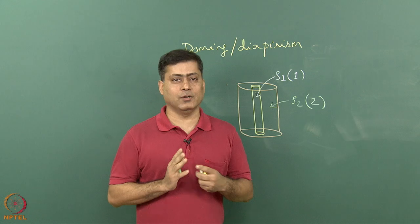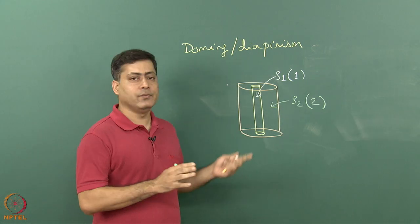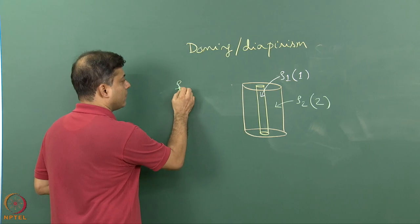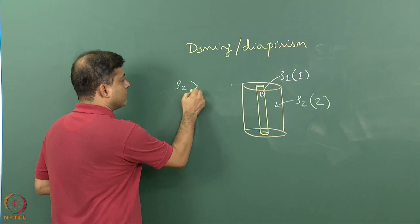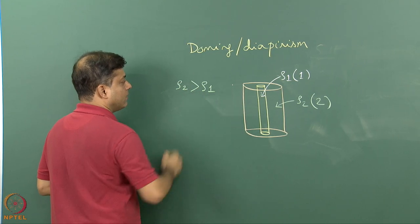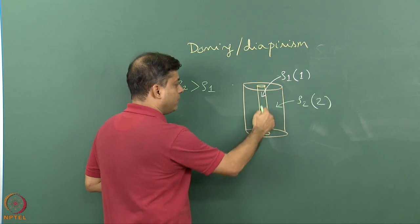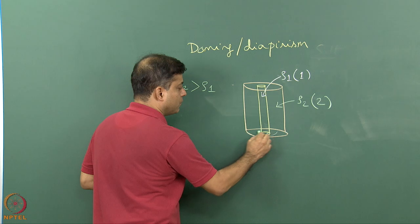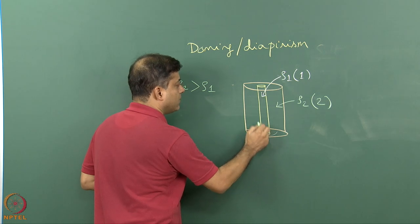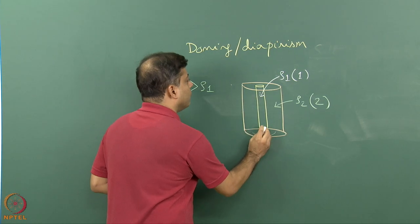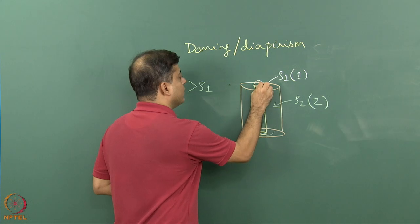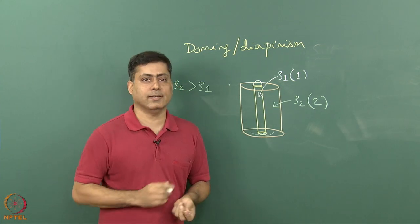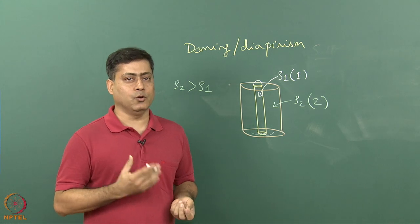If rho one equals rho two, fluids will not move - it is a stable condition. But in case rho two is more than rho one, the heavier fluid will start moving through the inside tube and will start pushing fluid one upward, producing a domal geometry. This can be called a mechanical model of doming or diapirism.